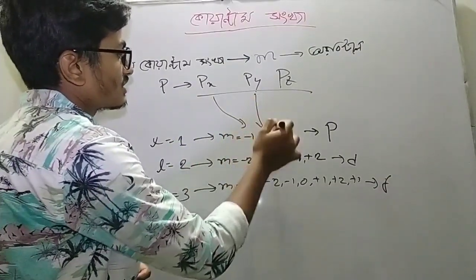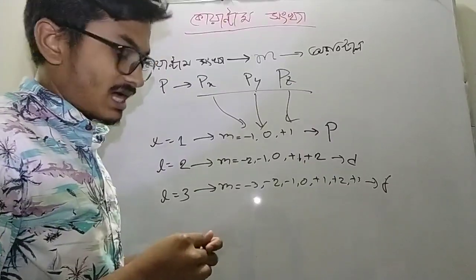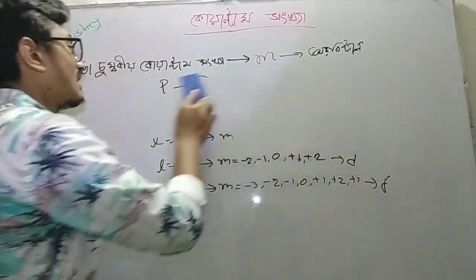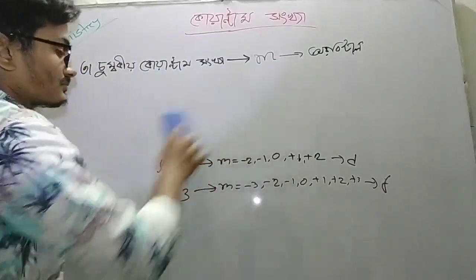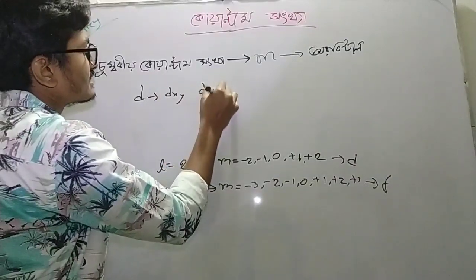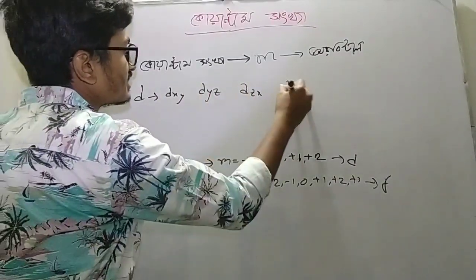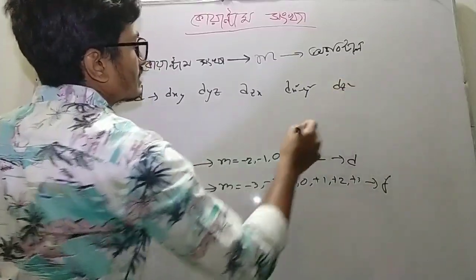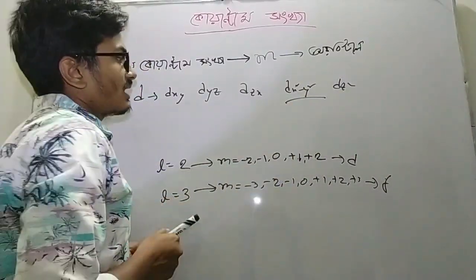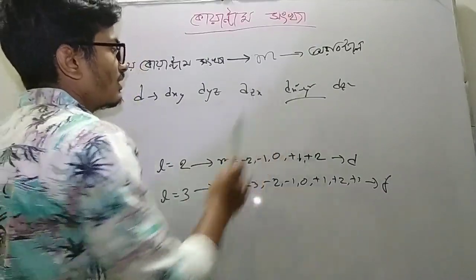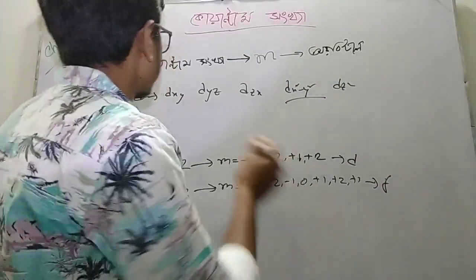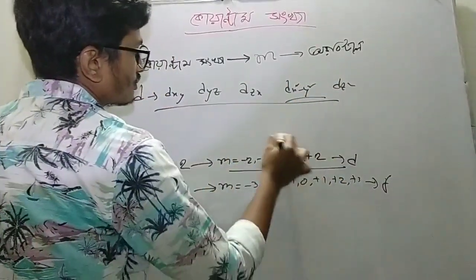So we have to read the d orbital names: dxy, dxy, d-xy, d-x, d-x, d-x, d-x, y-to, d-z-to. This means dx² and dz². I will write my dx² and y for the orbital orientations: dxz² and dz². So there are 5 d-type orbitals.